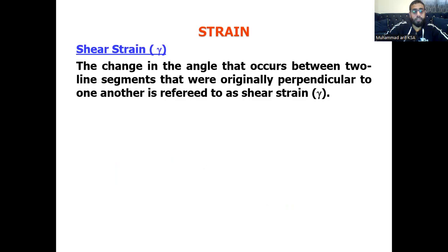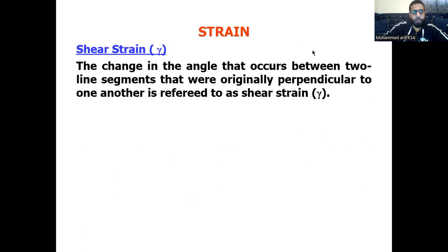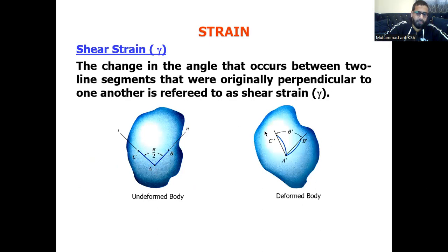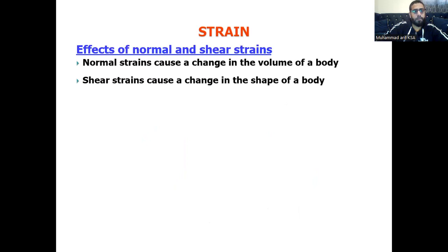Shear strain is the change in angle that occurs between two line segments that were originally perpendicular to one another. For example, we have two line segments AB and AC that are perpendicular to each other, represented by pi over 2. This is the undeformed shape. After deformation, the shape of the body changes to form the deformed body, and shear strain is represented by the corresponding formula.